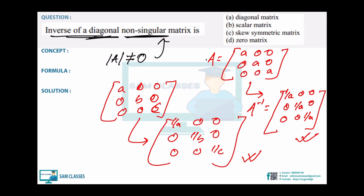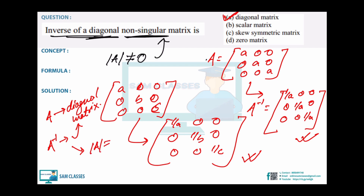We don't need the proof for your exam purposes. The key takeaway: if A is a diagonal matrix and det(A) ≠ 0 (non-singular), then A⁻¹ is also diagonal. We'll be going live very soon — any doubts, put in the comment section, and do like, share, and subscribe.